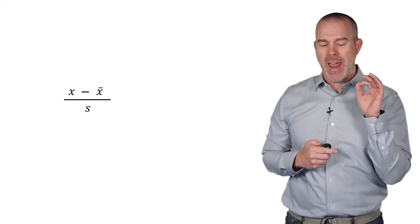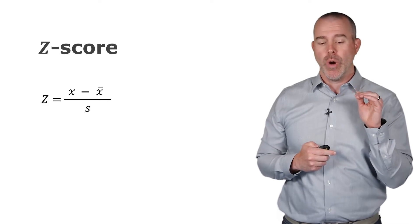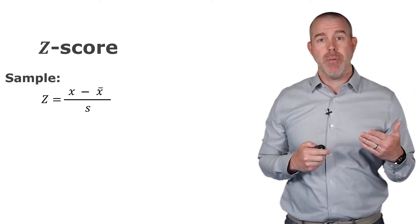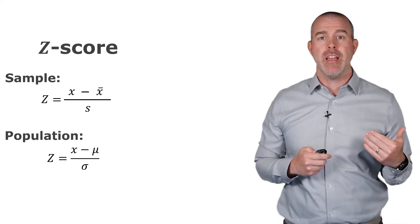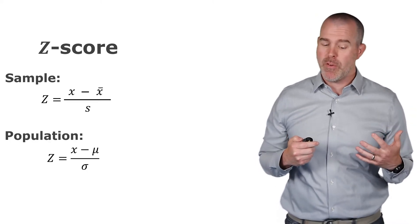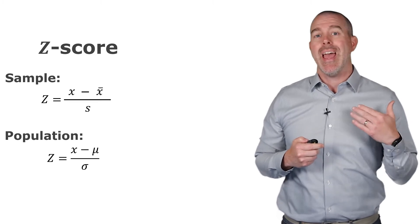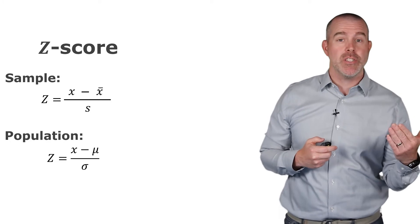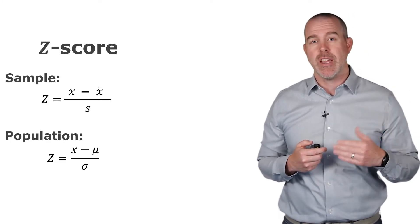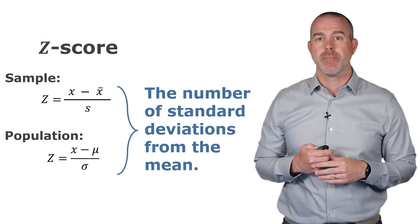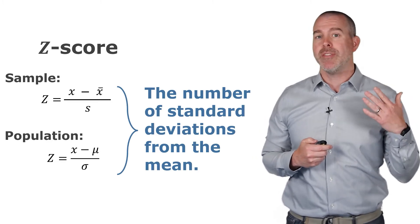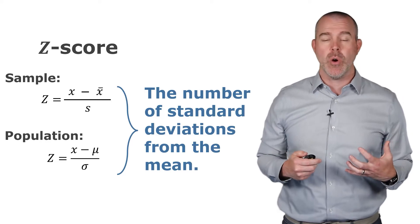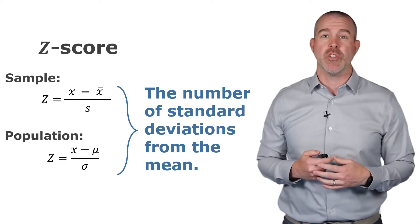Let's focus on that X minus X bar over S. We're going to call this the Z score. For the sample, it's X minus X bar over S. If you have population information with parameters, it's X minus the population mean mu over the population standard deviation sigma. In both cases, this gives you the number of standard deviations from the mean. This is really important: the Z score gives you the number of standard deviations from the mean.